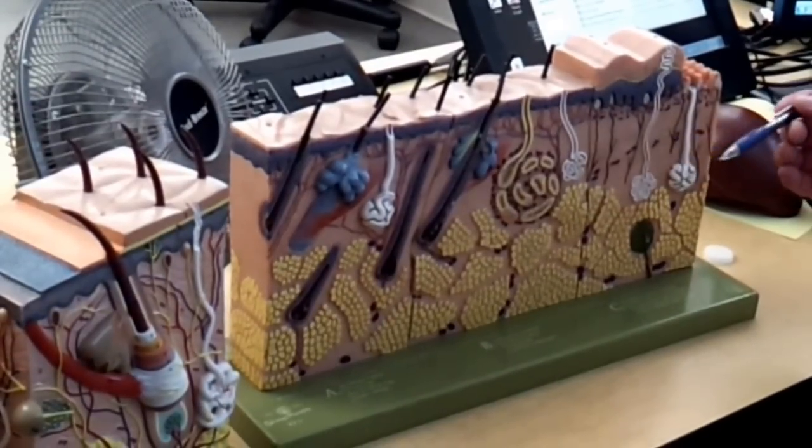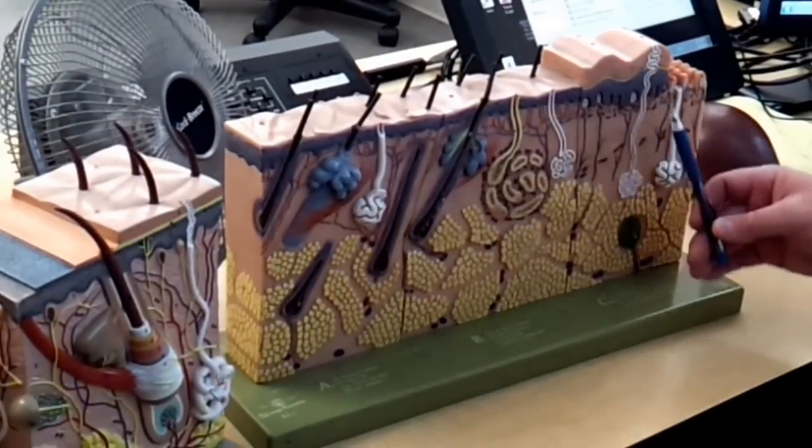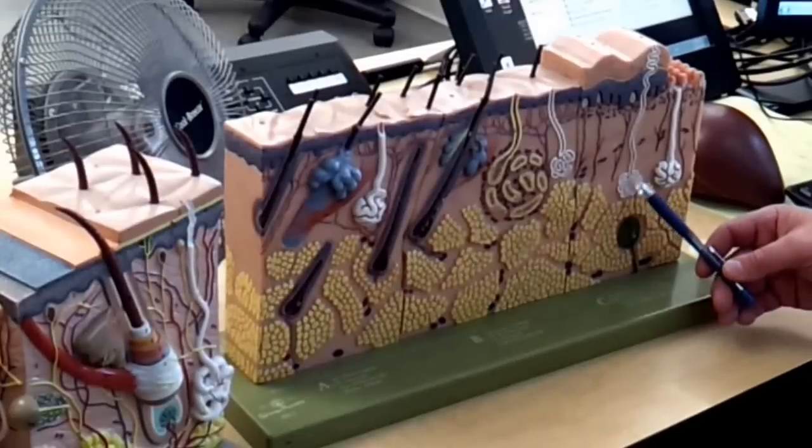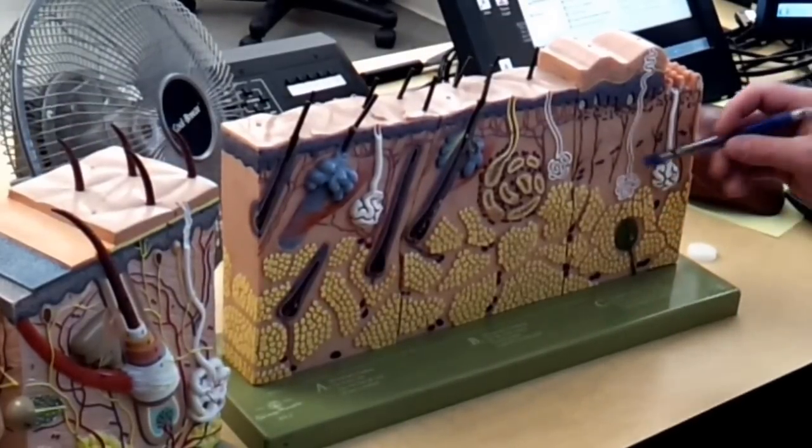But however, the gland that we're looking at that goes all the way through every layer is the thermoregulatory sudoriferous gland that's a merocrine gland—releases by exocytosis.